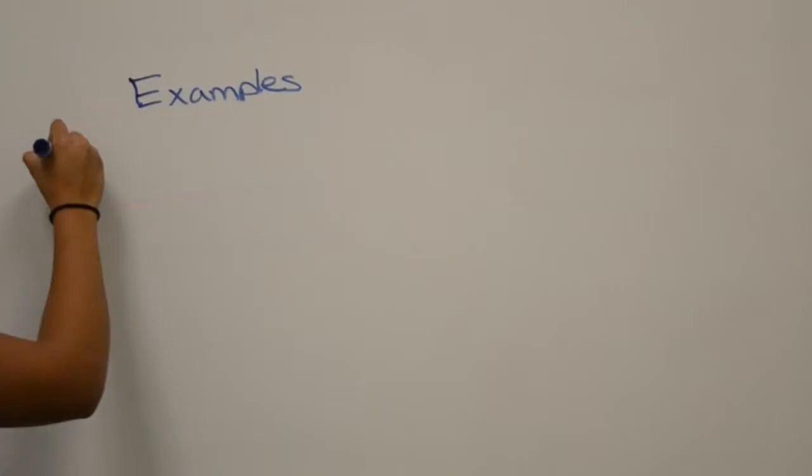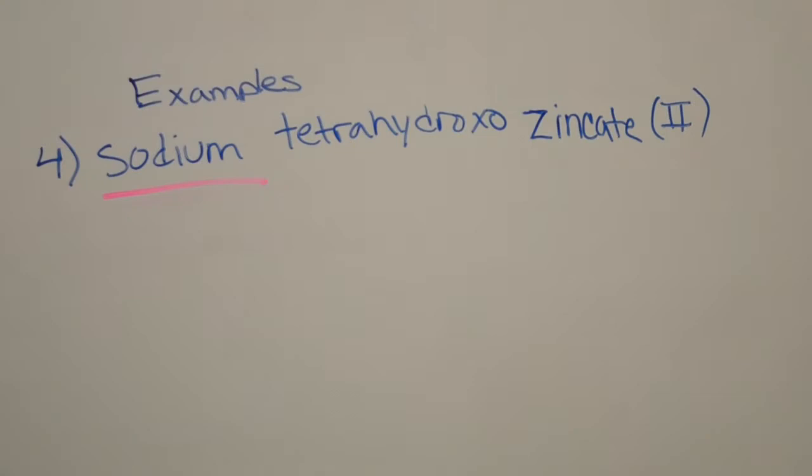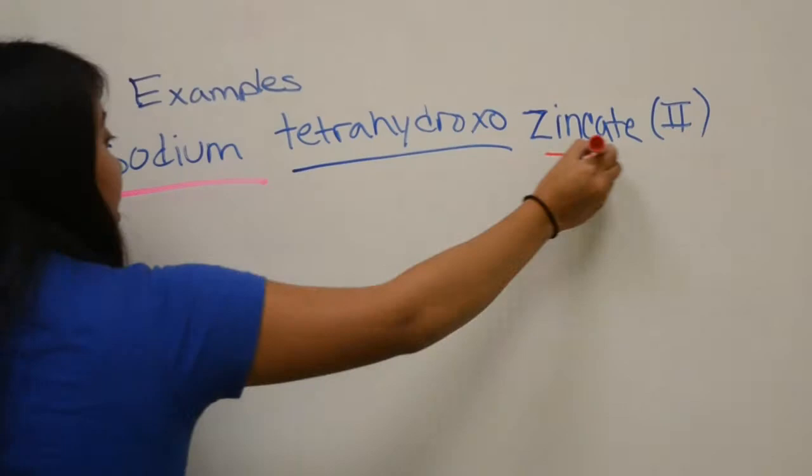Example 4 is sodium tetrahydroxyzincate. We have sodium as a cation, tetrahydroxyl as a ligand, and zincate as a metal.